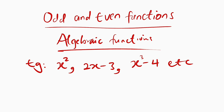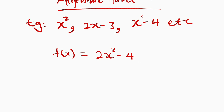Let's start with the first method. We have a function 2x squared minus 4, and we want to find out whether it is an even function or an odd function. The first method is by considering the exponents of the unknown variables. Here the power is 2, which is even, and the constant 4 has x to the power of 0, which is also even. So if all the powers of the unknown variables are even, then we say that function is an even function. Therefore this function is an even function.